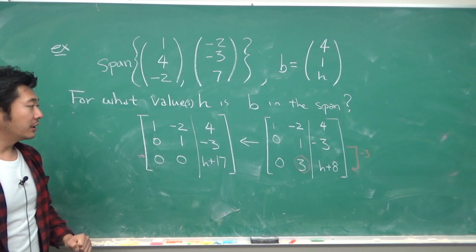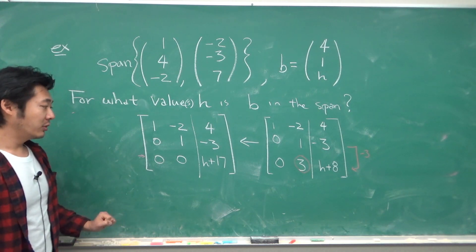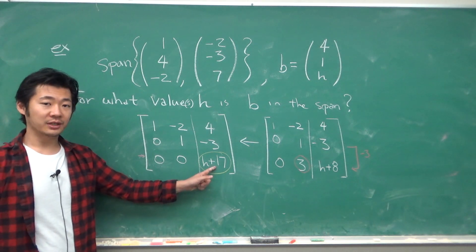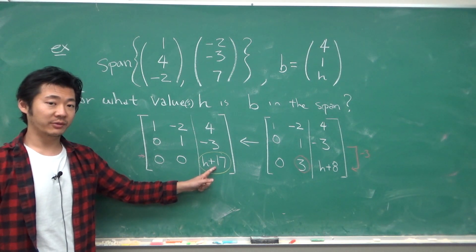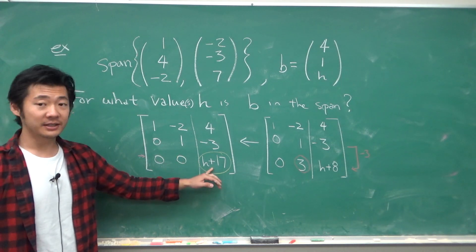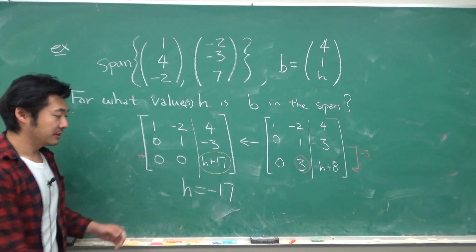So in order for this system to have a solution, we want to make sure that this entry is 0. Because if you write out the linear system of equations, on this side will be 0 equals, if it's not 0, then there's no solution. So h equals negative 17.